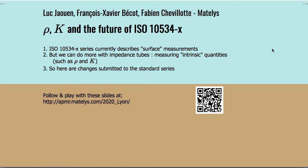This work entitled 'Rho K and the Future of ISO 10534' is about the fact that in the current ISO 10534 we have a description of how to measure surface measurements of porous samples. While we can do much more with an impedance tube, we can also measure intrinsic quantities such as Rho, the dynamic mass density, and K, the dynamic bulk modulus. So there have been changes submitted to the standard series, which I will discuss quickly.